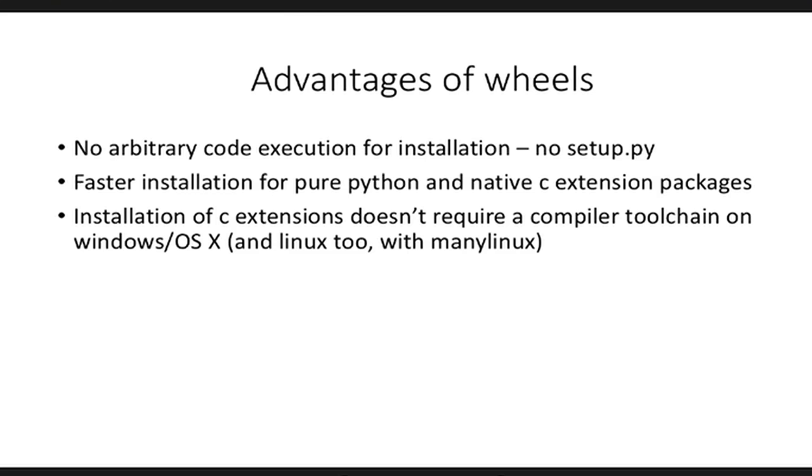Installation of C extensions doesn't require a compiler tool chain, which is one of the biggest problems with source distributions. If I'm pulling something from source and that package has C extensions, I'll need not only pip but also a compiler on my system to build those C files. A C extension in Python calls into C functions, and during the build step those C programs get compiled. So you definitely need a compiler on your system. If something goes wrong, pip will tell you it could not install your Python package with the C extension — for example pyco or pyopenssl require a compiler tool chain on a fresh host.